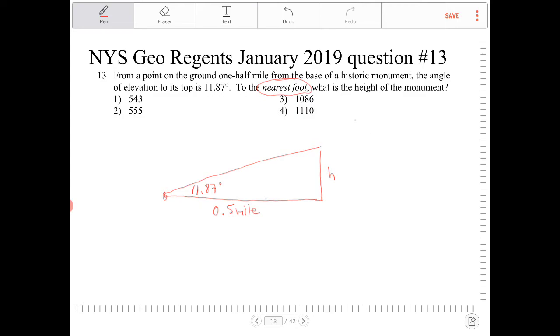So we're going to need to convert the 0.5 mile into units of feet. I understand that one mile is equivalent to 5,280 feet. So half of that would be 2640. Yes, it would. So instead of writing a half mile, I'm going to write 2640.